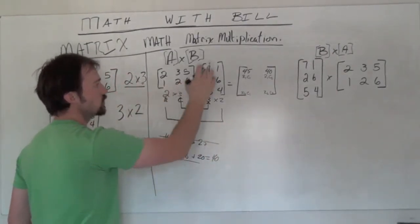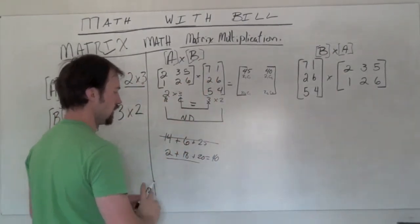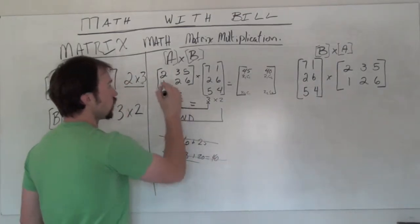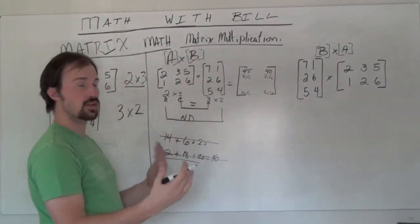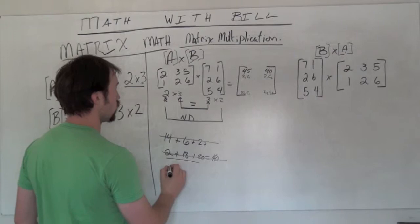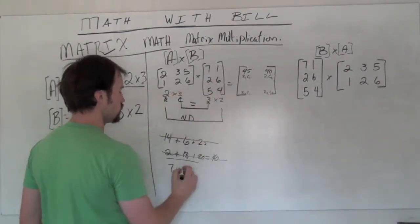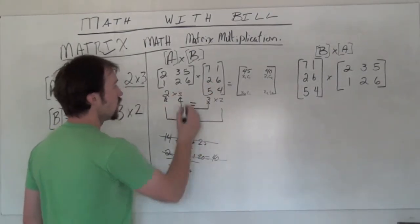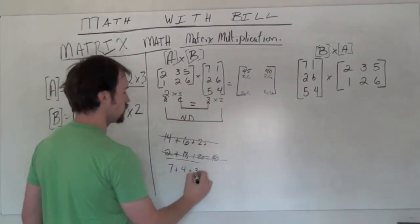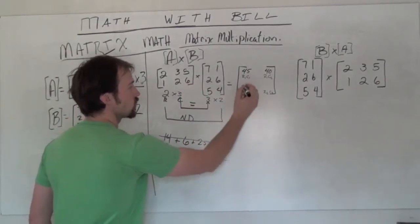Row 2, column 1, now we take 1, 2, 6 times 7, 2, 5. So the 1 times the 7, it's the first of each of those again. So we take 1 times 7, or 7, plus 2 times 2, which is 4, plus 6 times 5, which is 30, which gives us a total of 41.